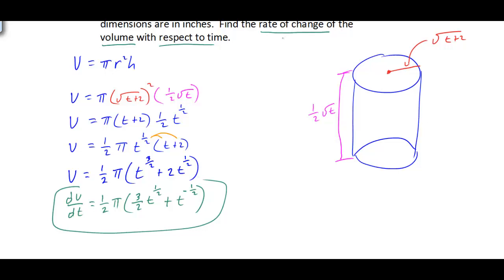This gives us the rate of change of the volume with respect to time. If you want to know the specific rate of change of the volume at any time, you simply plug that time in for the variable t, and that will tell you how fast the volume is changing at that specific time.